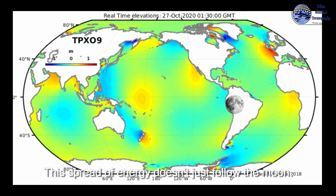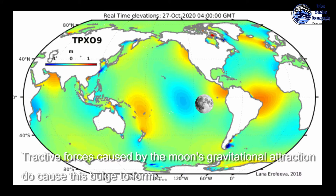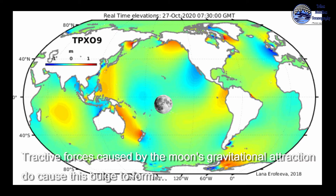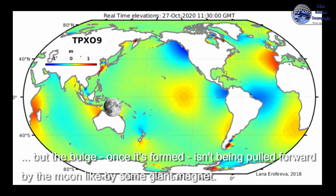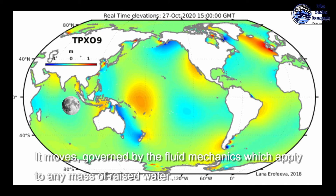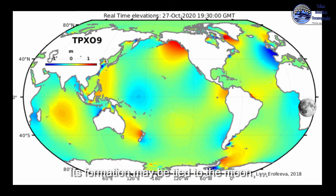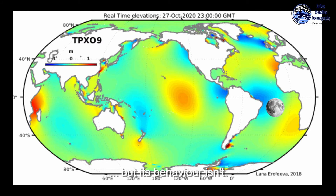This spread of energy doesn't just follow the moon. Attractive forces caused by the moon's gravitational attraction do cause this bulge to form, but the bulge, once it's formed, isn't being pulled forward by the moon like by some giant magnet. It moves governed by the fluid mechanics which apply to any mass of raised water. Its formation may be tied to the moon, but its behavior isn't.